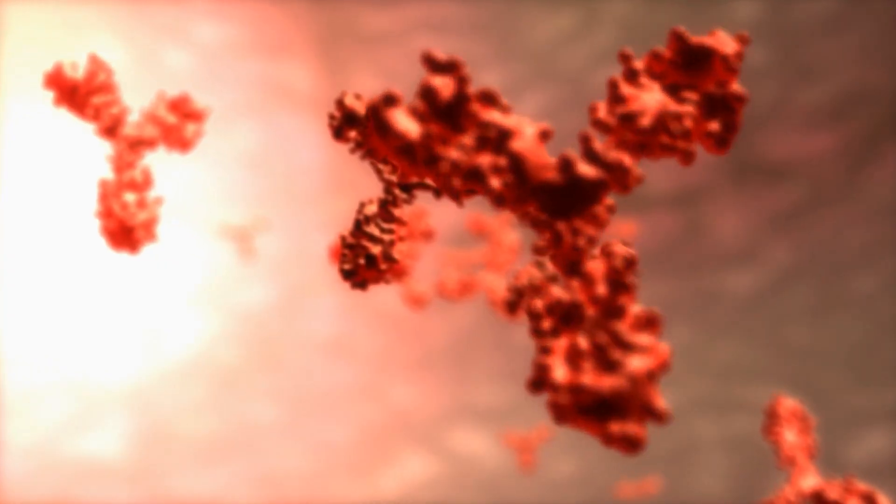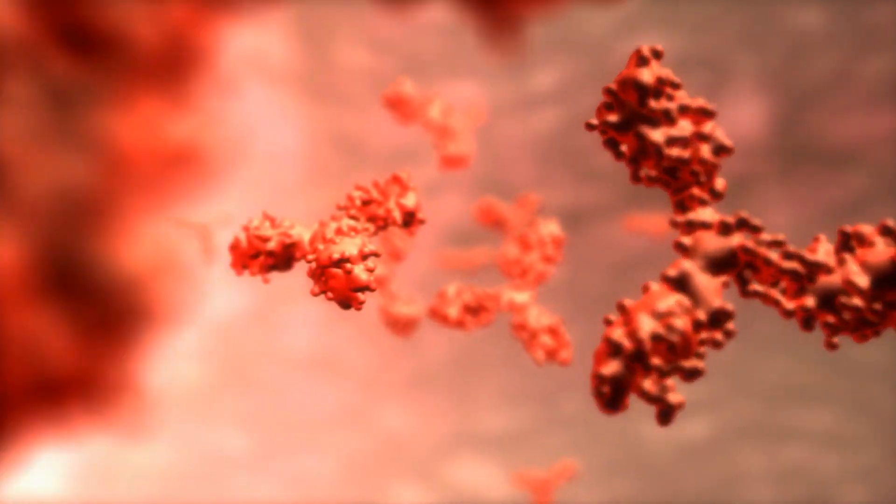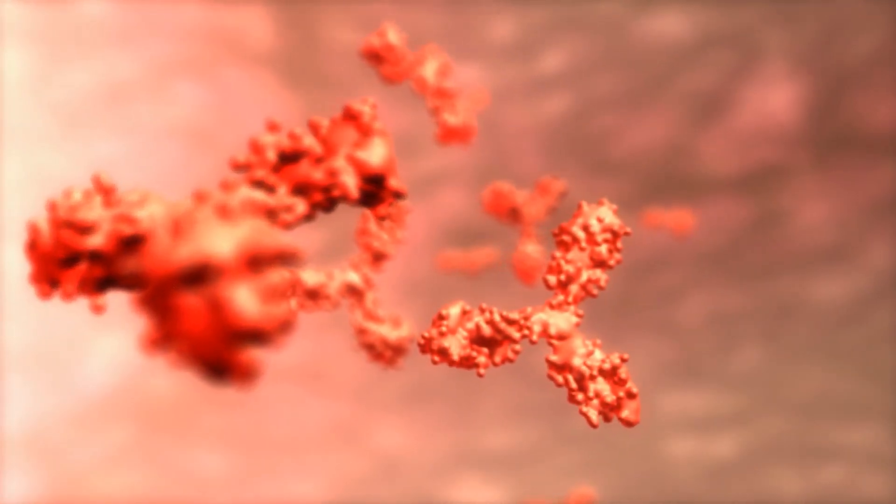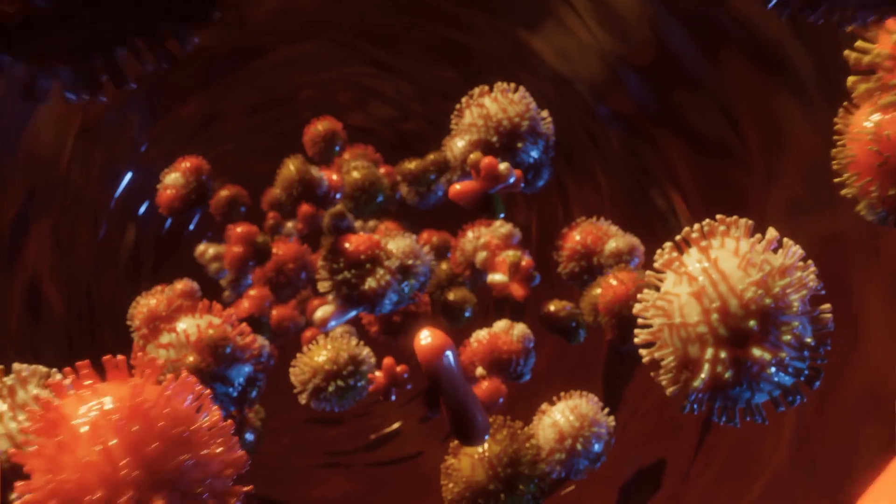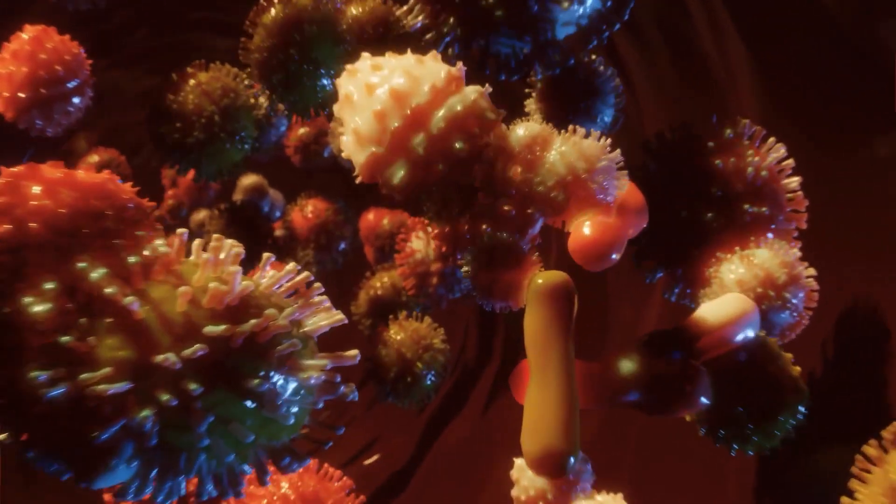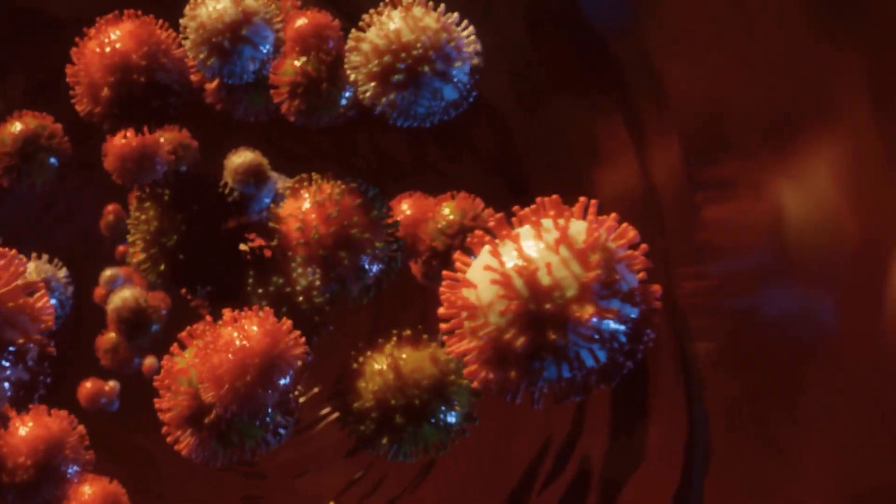The immune system is very complex, composed of many cells and processes, some of which are not yet fully understood by science. But we do know that it can remember past encounters and adapt against them in the future.